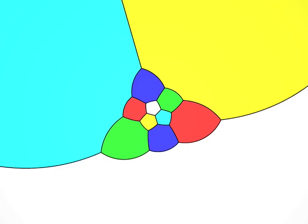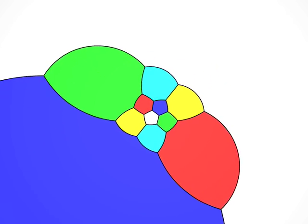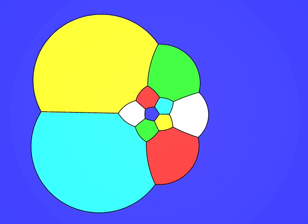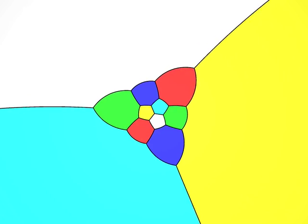Let's look at the dodecahedron. Each face is a pentagon. If we count them, there are 12 faces. Three edges start at each vertex.